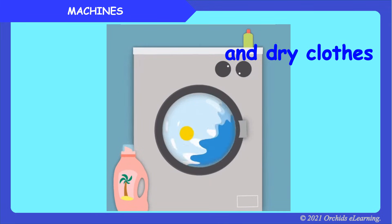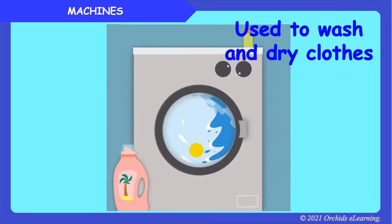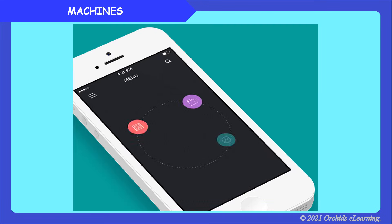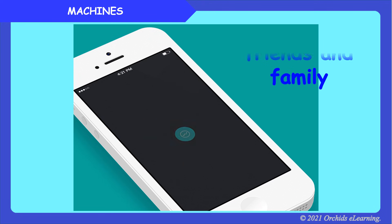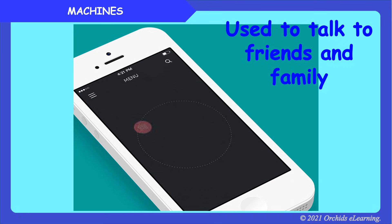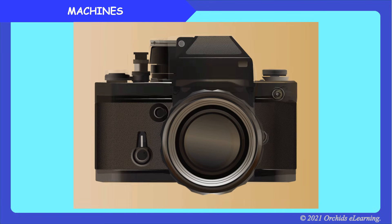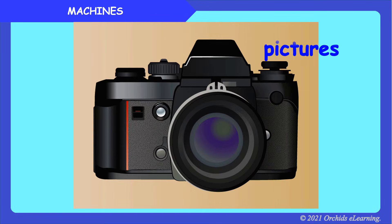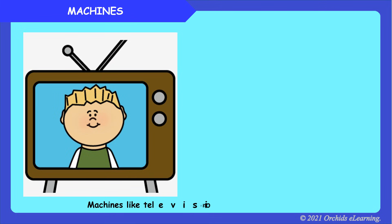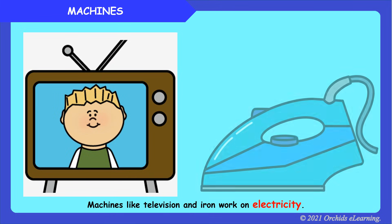A washing machine is used to wash and dry clothes — it is used inside the house. An air conditioner keeps a room cool — it is used inside the house. A mobile phone is used to talk to friends and family — it is used inside and outside the house. A camera is used to click photographs and make videos.